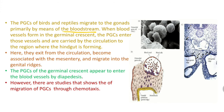In the region of the hindgut, PGCs exit from circulation, become associated with the mesentery, and migrate into the genital ridges. The PGCs of the germinal crescent appear to enter blood vessels by diapedesis, though studies also show migration of PGCs through chemotaxis. In the images, primordial germ cells can be seen moving out of blood vessels by diapedesis toward the respective genital ridges.